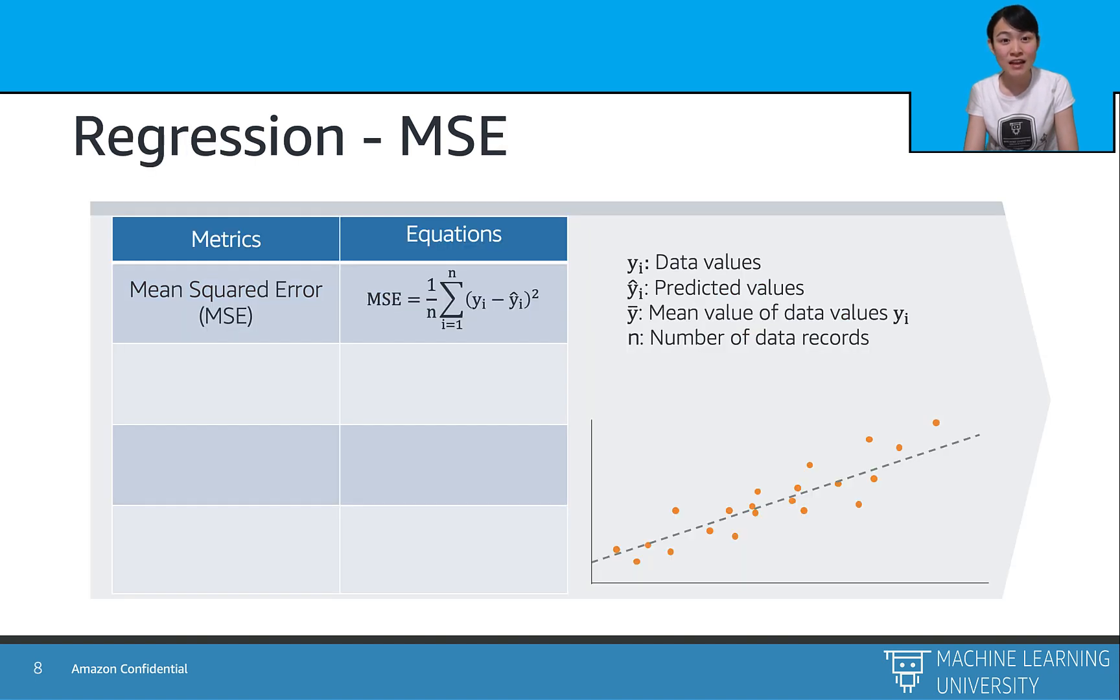So the first one is the mean square error or MSE, also being referred as the L2 loss. It is one of the most preferred matrices for regression tasks. It is simply the average of the square difference between the target value and the value predicted by the regression models. Well, as MSE squares the difference, it penalizes even a small error, which leads to overestimation of how bad the model is. It is preferred more than other matrix because it is differentiable and hence it can be optimized better.